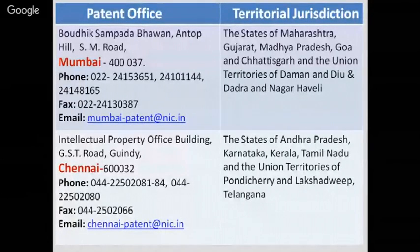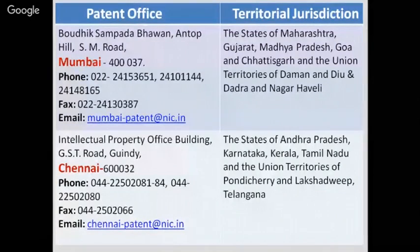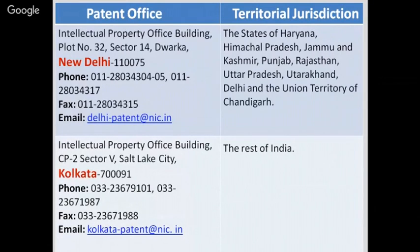For filing patents, we can approach patent offices depending on territorial jurisdiction. The Mumbai patent office covers Maharashtra, Gujarat, Madhya Pradesh, Goa, Chhattisgarh, and the union territories of Daman and Diu and Dadra and Nagar Haveli. The Chennai intellectual property office covers Andhra Pradesh, Karnataka, Kerala, Tamil Nadu, and union territories of Pondicherry, Lakshadweep, and Telangana. The New Delhi patent office covers Haryana, Himachal Pradesh, Jammu and Kashmir, Punjab, Rajasthan, Uttar Pradesh, Uttarakhand, Delhi, and Chandigarh. The Kolkata office is the headquarters of the IP rights office and covers the rest of India.